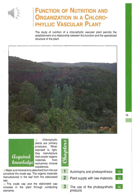As we know, chlorophyllic plants are primary producers. When exposed to light, they manufacture their proper organic materials from exclusively mineral substances. Water and mineral ions absorbed from the soil constitute the crude sap. The organic material manufactured in the leaf forms the elaborated sap. Both the crude sap and the elaborated sap circulate in the plant through conducting elements.